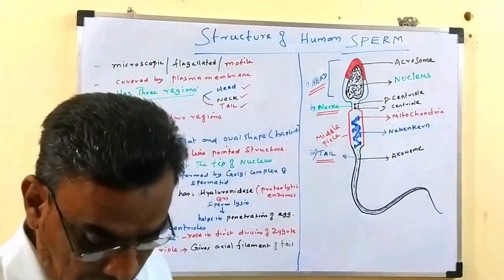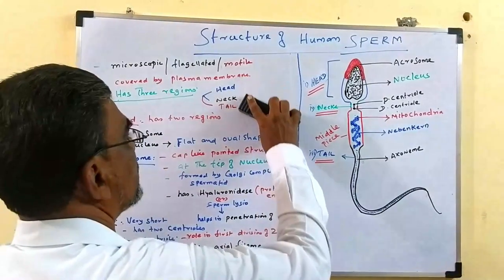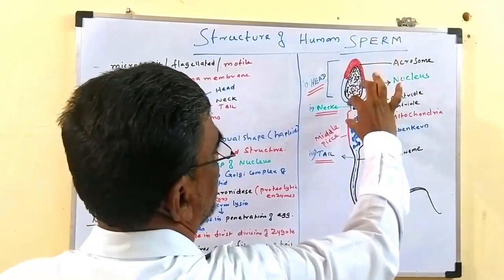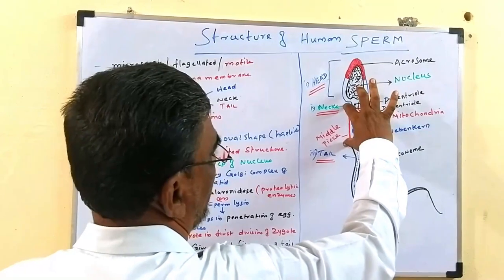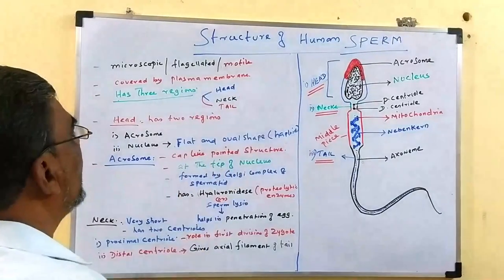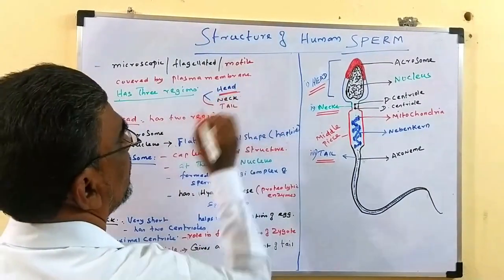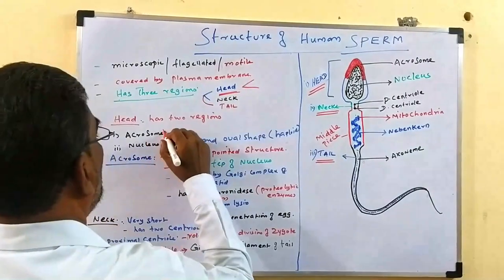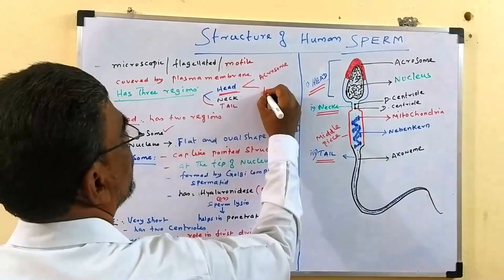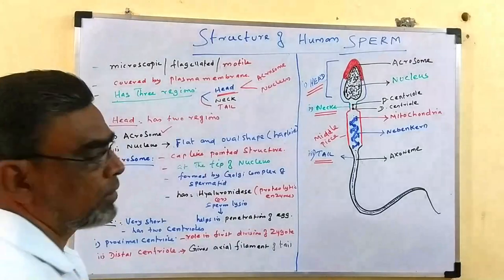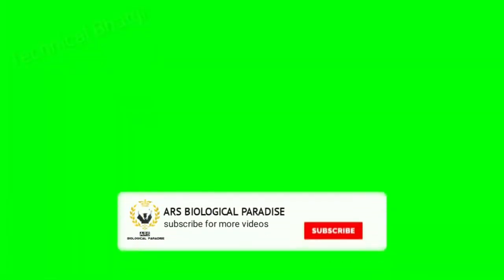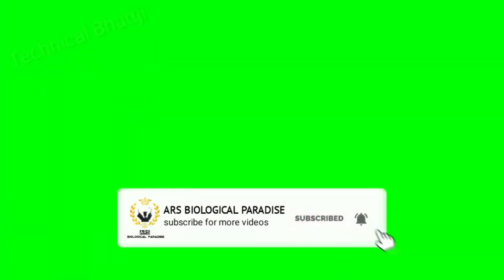You can see these three regions here. The first one is the head region, the second one is the middle piece or neck region, and the long one is the tail region. The head region itself has two sub-regions. One is called acrosome, and the second is called nucleus. This head region has two structures: acrosome and nucleus.